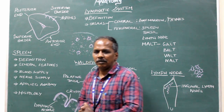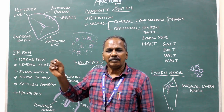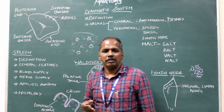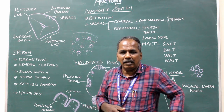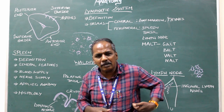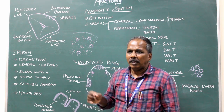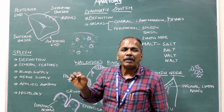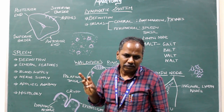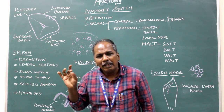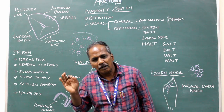The spleen is the largest lymphatic organ in the body. It is situated in the left hypochondrium in the mid-axillary line. It is a wedge-shaped organ, purple in color. It is 1 inch thick, 3 inches broad, 5 inches long, and weighs about 7 ounces, which is approximately 200 grams.